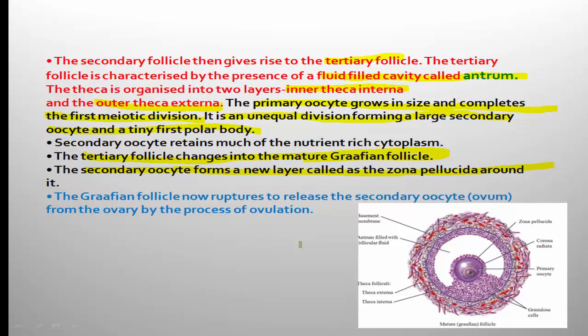When the primary oocyte inside the tertiary follicle completes the first meiosis — an unequal division forming a large secondary oocyte and a small polar body — the tertiary follicle attains maturity and is transformed into the graafian follicle. The secondary oocyte forms a zona pellucida around itself. The cell present inside the graafian follicle is the secondary oocyte.